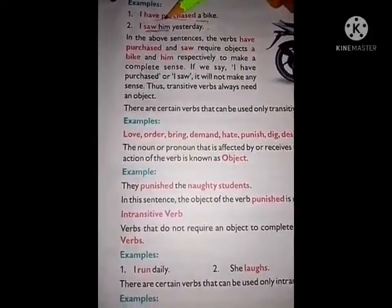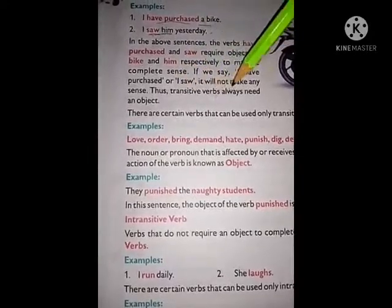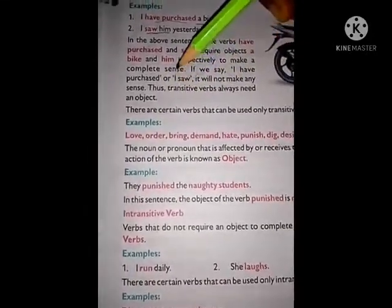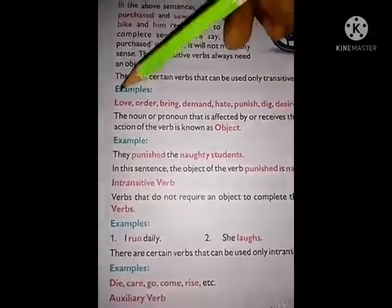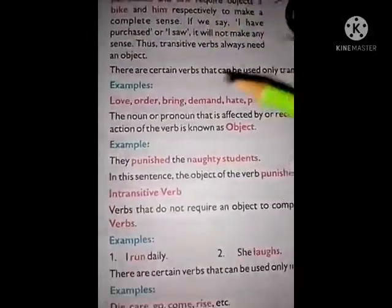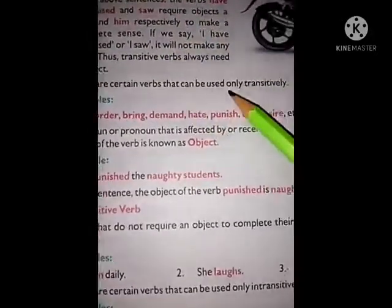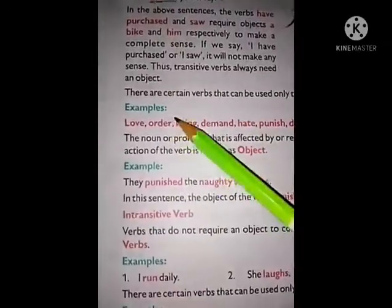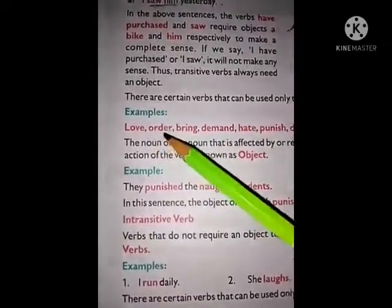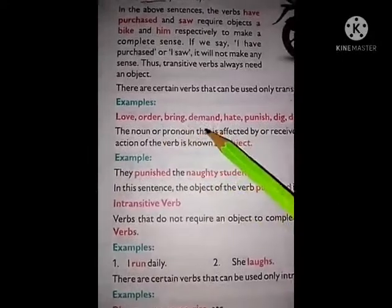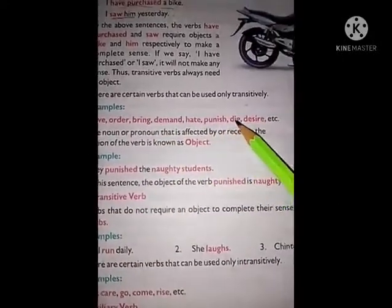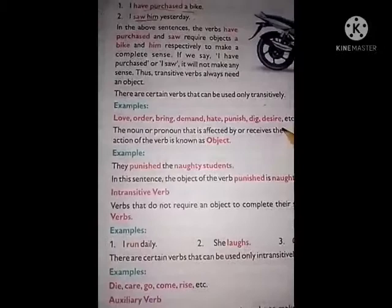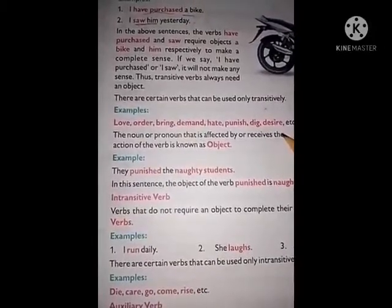Thus transitive verbs always need an object to make a complete sense. There are certain verbs that can be used only transitively. Examples: love, order, bring, demand, hate, punish, dig, desire, etc. These are the transitive verbs.